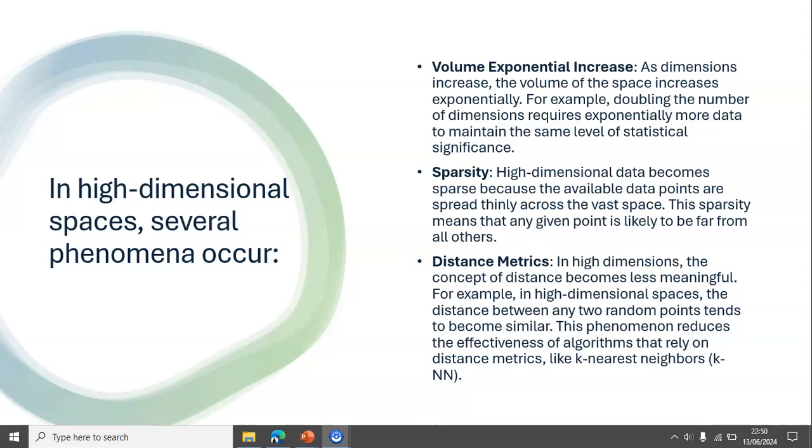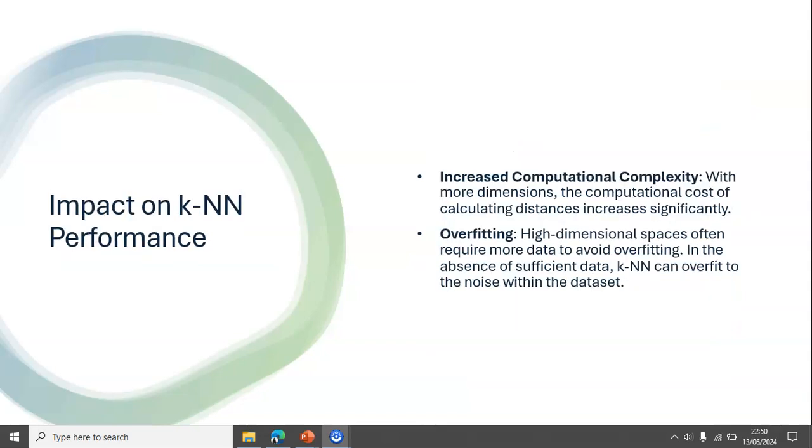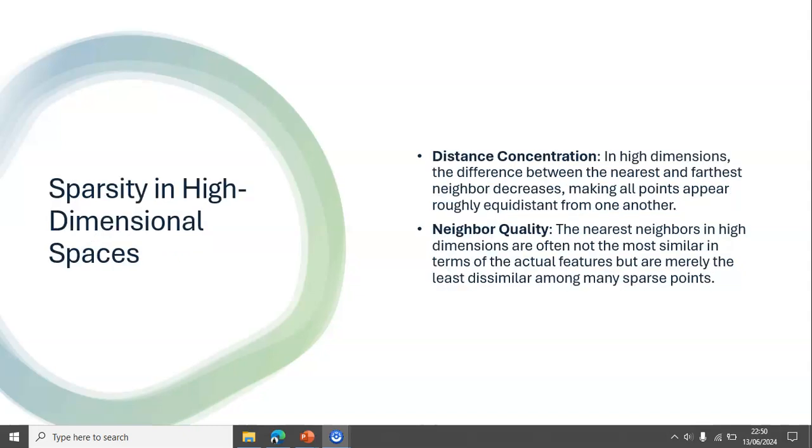This leads to various things such as sparsity, distance measures, and increase in volume. This affects k-NN performance exponentially because it leads to overfitting and increased computational complexity. In addition, the sparsity in high dimensional spaces leads to neighbor quality being affected.